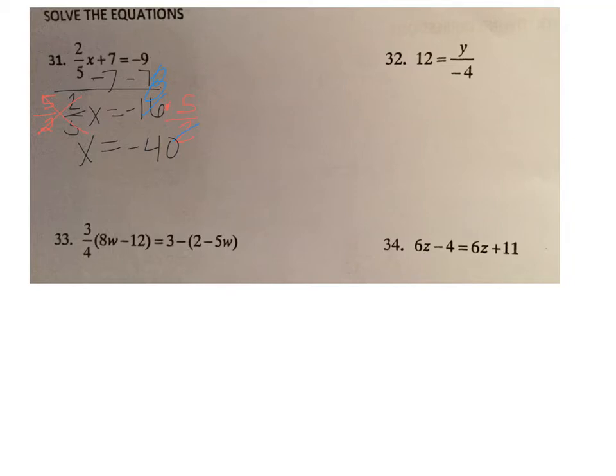Number 32, 12 equals y divided by negative 4. Remember that y over negative 4 means divide. The opposite of divide is multiply. So we'll multiply both sides of the equation by negative 4, so y equals negative 48.